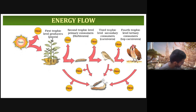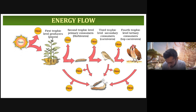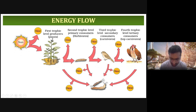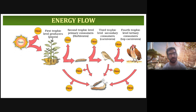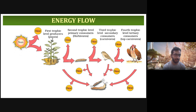Let's continue from the last topic and try to finish the ecosystem part today. We were understanding about the energy flow. The heat and light comes from the sun — the primary source of energy. It goes to the first trophic level.